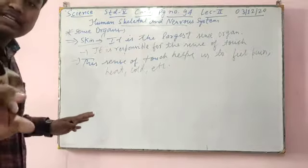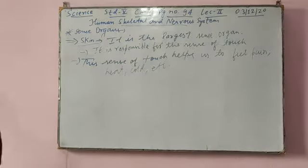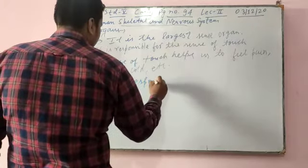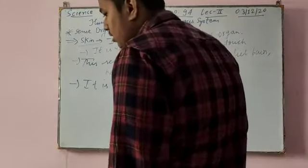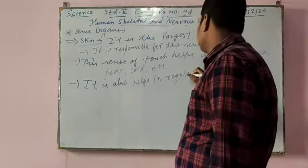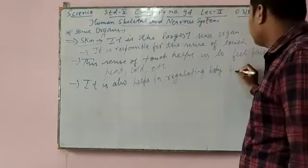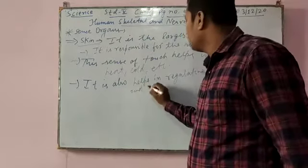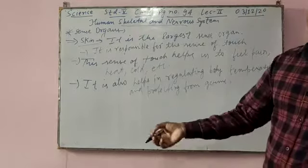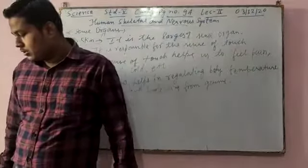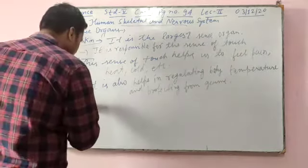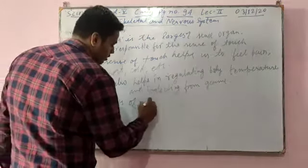Skin also helps in regulating body temperature and protecting the body from germs. Imagine if you did not have skin — whatever germs are there would directly enter your body. That is why skin is very important. The skin consists of three layers: epidermis, dermis, and hypodermis.